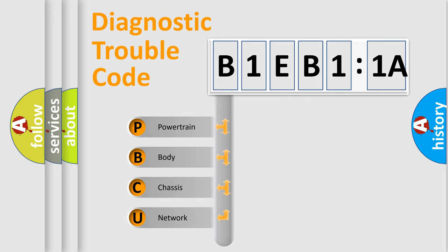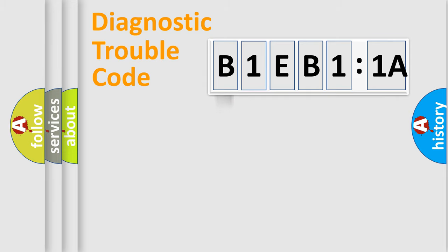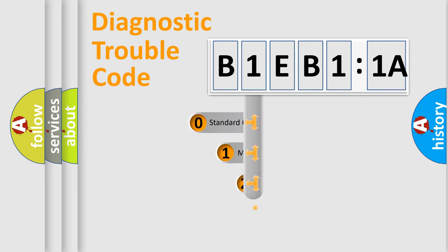We divide the electric system of automobile into four basic units: Powertrain, Body, Chassis, and Network. This distribution is defined in the first character code.